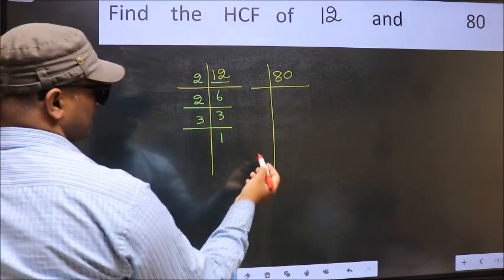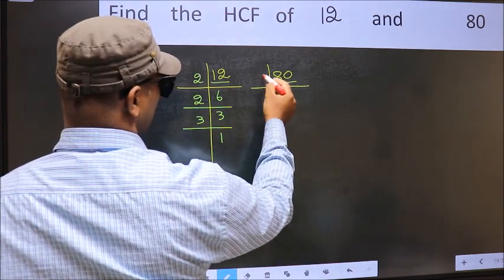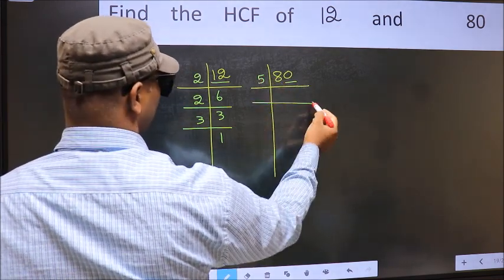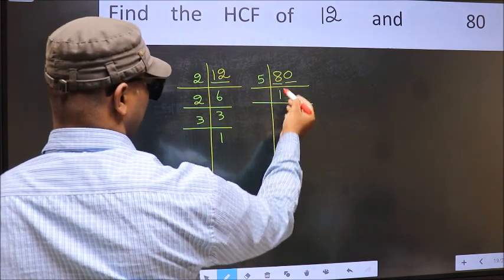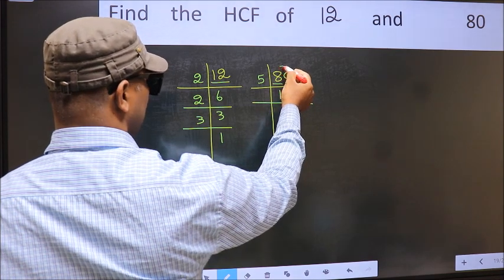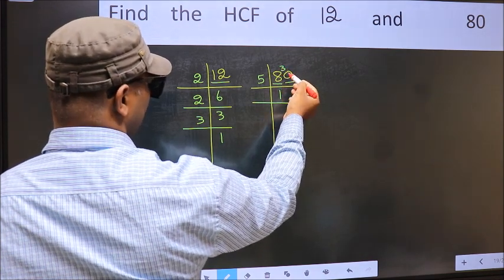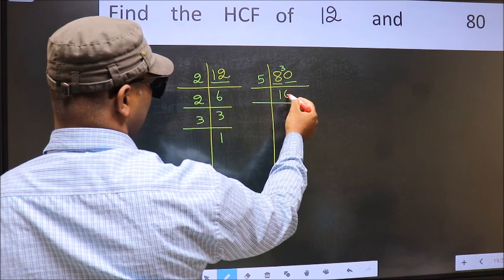Now the other number. Last digit 0, so take 5. First number 8. A number close to 8 in the 5 table is 5 times 1 is 5. 8 minus 5 is 3, carried forward gives 30. When do we get 30 in the 5 table? 5 times 6 is 30.